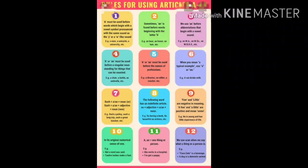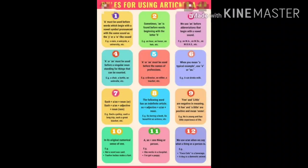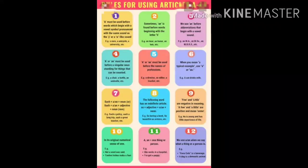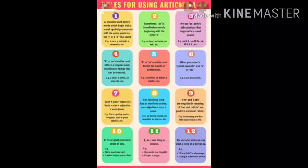Tenth point: in its original numerical sense of 'one'. Example: not a word was said; twelve inches make a foot. Eleventh point: A or AN means one thing or person. Example: she works in a hospital; I have got a puppy. Twelfth and the last point: we use A or AN when we say what a thing or a person is. Example: Coca-Cola is a beverage; a dog is a domestic animal.